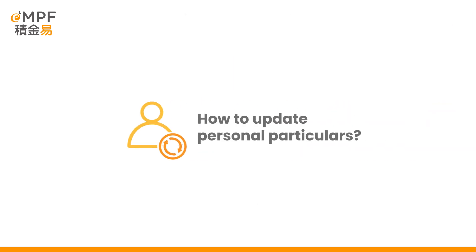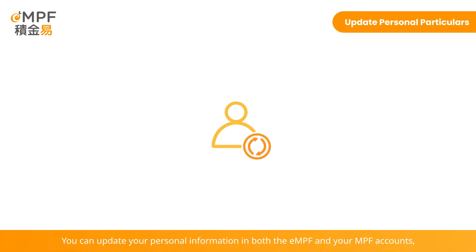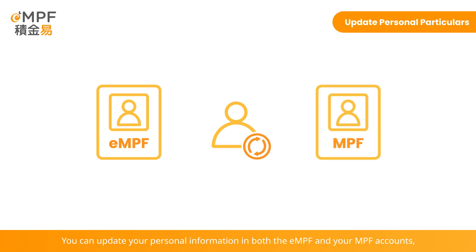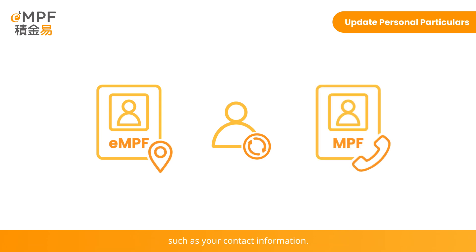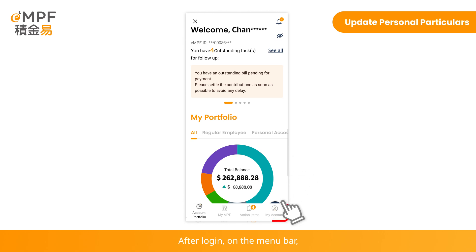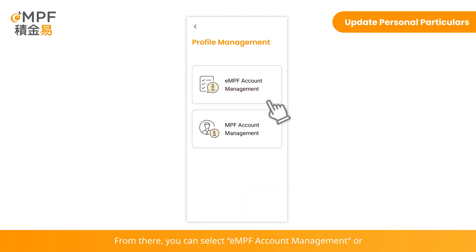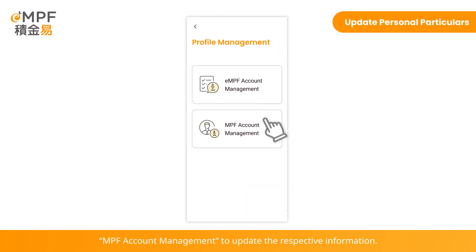How to update personal particulars for your EMPF and MPF accounts. You can update your personal information in both the EMPF and your MPF accounts, such as your contact information. After login, on the menu bar, tap My Account and tap Profile Management. From there, you can select EMPF Account Management or MPF Account Management to update the respective information.